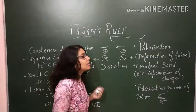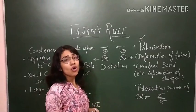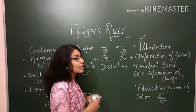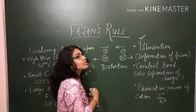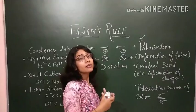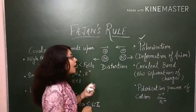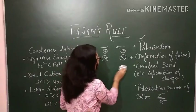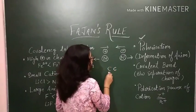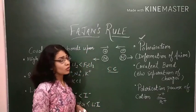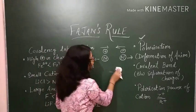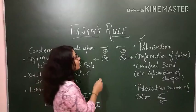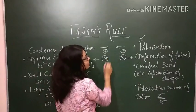This is the reason that most ionic bonds are not 100% ionic, and there is some extent of covalent character present in them. Let's see how polarization gives rise to covalent character.